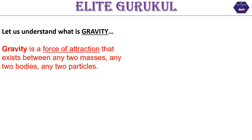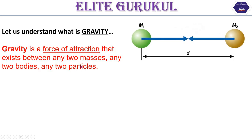Gravity क्या है, अभी हम इसे समझने वाले हैं। यहाँ पर definition है: gravity is a force of attraction that exists between any two masses, any two bodies, and two particles. Gravity एक force of attraction है किसी भी दो masses में, या दो bodies में, या दो particles में। जैसे आप देख सकते हो — mass M1 and M2 — तो इन दोनों के बीच जो attraction force होगा, जो force होगा, इन दोनों को towards खींचेगा — वह force gravity है।